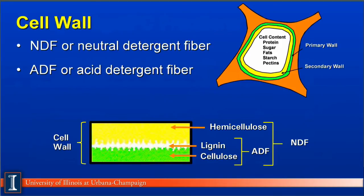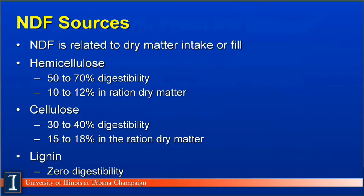Let's now go to our other major breakdown, and that is cell wall, consisting of neutral detergent fiber, or NDF, and acid detergent fiber, or ADF. Sources of NDF would include hemicellulose, cellulose, and lignin. The key factor is that NDF is related to dry matter intake, or fill — as cows eat high levels of NDF, they can't eat as much feed. Hemicellulose is fairly high in digestibility, varying from 50% to 70% depending on source and processing, and typically varies from 10% to 12% in the total ration dry matter for lactating cows.